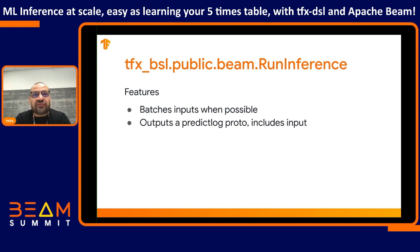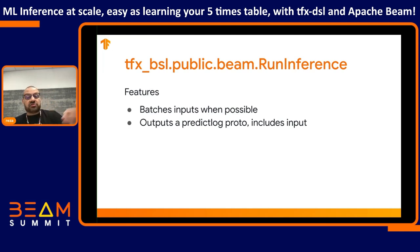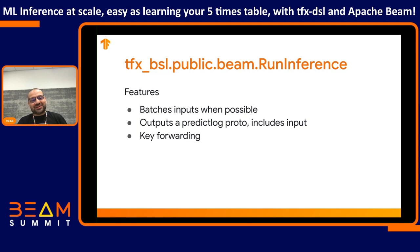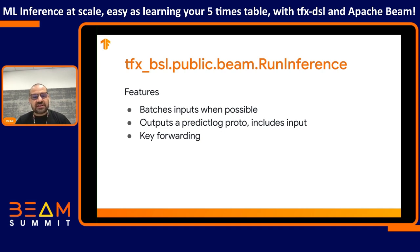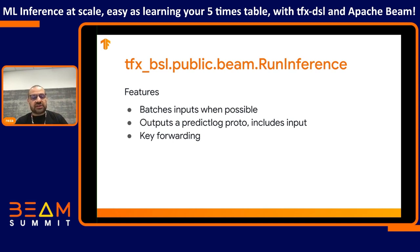The output from run inference is already nicely specified as a predict log, which is a proto — a well-understood output that we can pass on to other transforms. Key forwarding is another important feature: imagine you have an image where the data is what you send to the model, but the image name is metadata you need for post-processing. Or imagine data from an IoT device — you need the device's ID to know which device the prediction belongs to. Run inference takes care of this for us with very little effort.